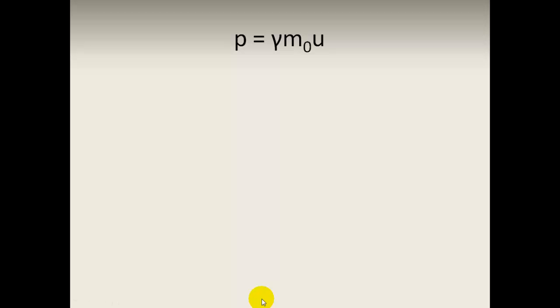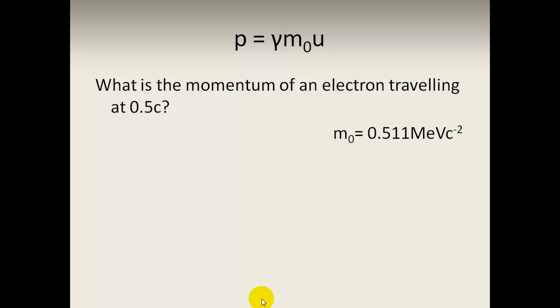Momentum equals gamma rest mass times velocity. What is the momentum of an electron traveling at 0.5 times the speed of light? Well, the rest mass is 0.511 MeV per c squared, and the momentum equals gamma m0 u. The rest mass equals 0.511, that goes here times u, and you're told it's 0.5 times c.